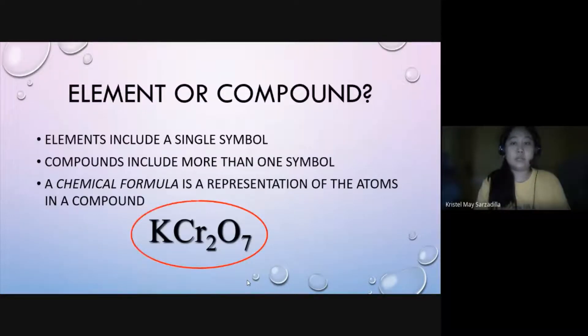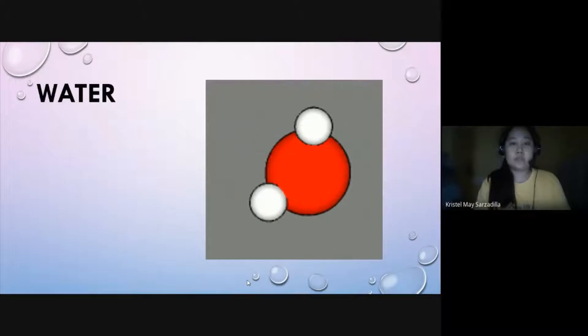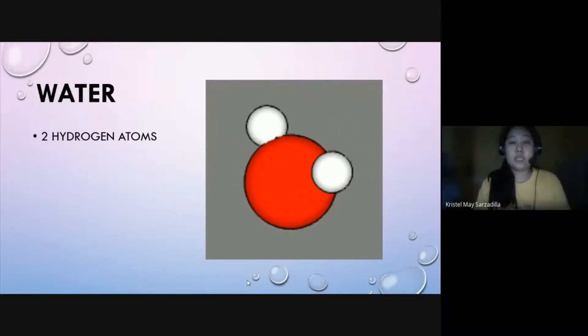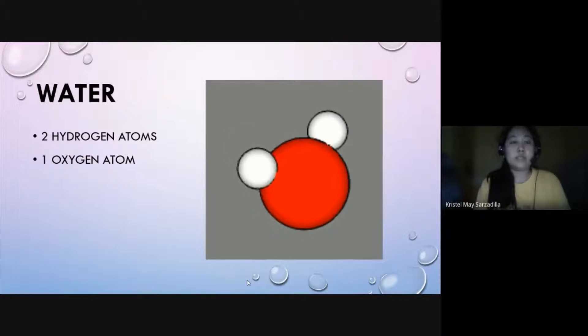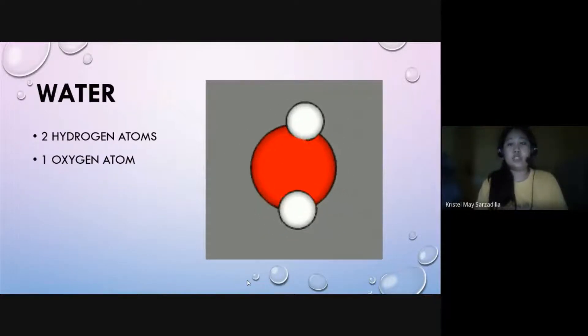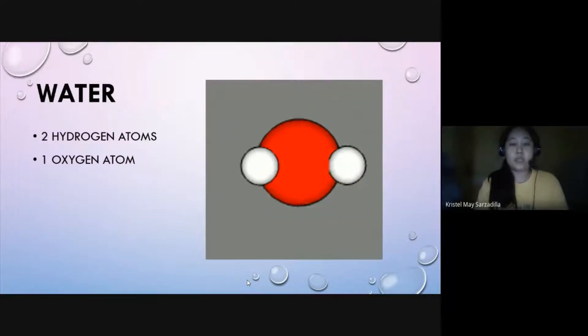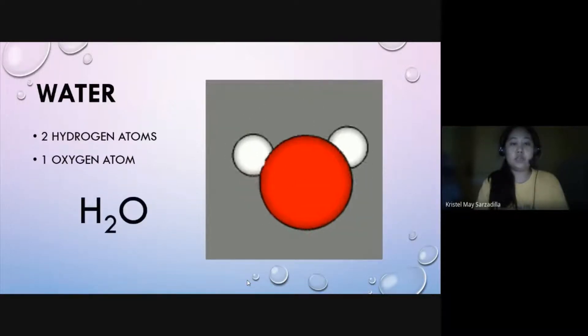This is an example of a chemical formula. So, this chemical formula has one potassium, two chromium, and seven oxygen atoms. Another example, we have here water. And on the right is the water molecule. Water has two hydrogen atoms represented by the two white spheres on the image. It also has one oxygen atom represented by the red sphere. So, the ratio of hydrogen to oxygen is two is to one. If you're going to write the chemical formula, it would be H2O. Two hydrogen for every one oxygen.